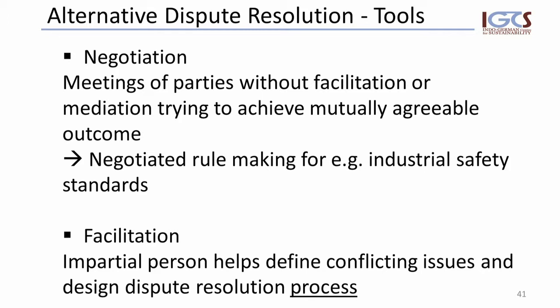The next level is called facilitation, where an impartial person helps to define the conflicting issues and to design a dispute resolution process. This is not about finding the solution itself, but rather to identify the conflict evolution pathway, understand the issues at hand, and then come up with a process for how to deal with that conflict.